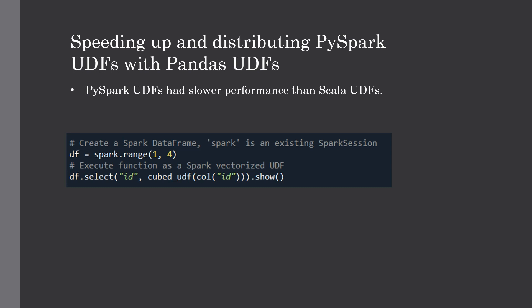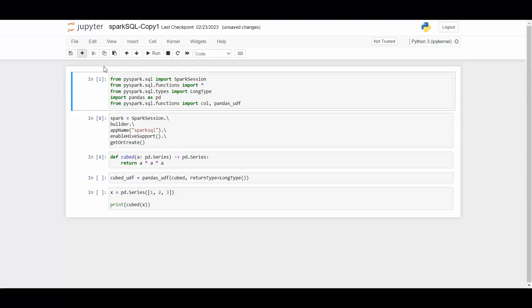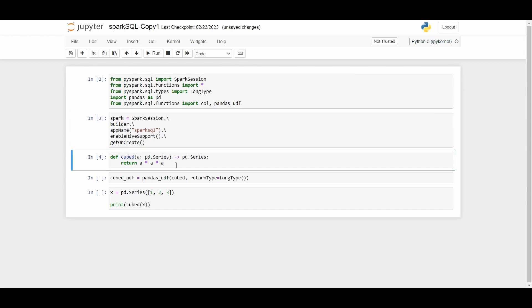To resolve this performance issue, we use Pandas UDFs, also known as vectorized UDFs, introduced in Apache Spark 2.3. Pandas UDFs use Apache Arrow for transferring data and Pandas to work with that data. All you have to do is define a Pandas UDF using the 'pandas_udf' keyword as a decorator wrapping your function. Once data is in Apache Arrow format, there is no longer a need to serialize it, since it's already in the format consumed by the Python process.